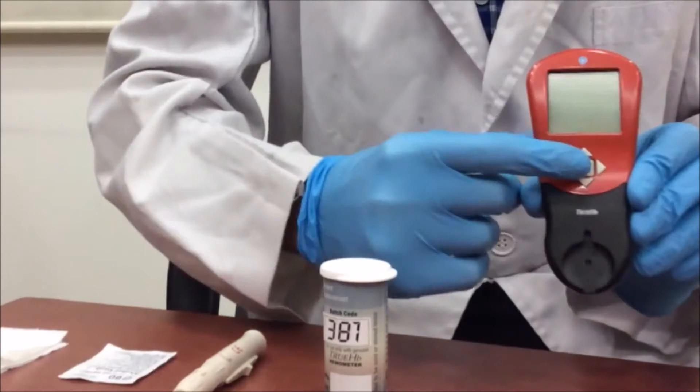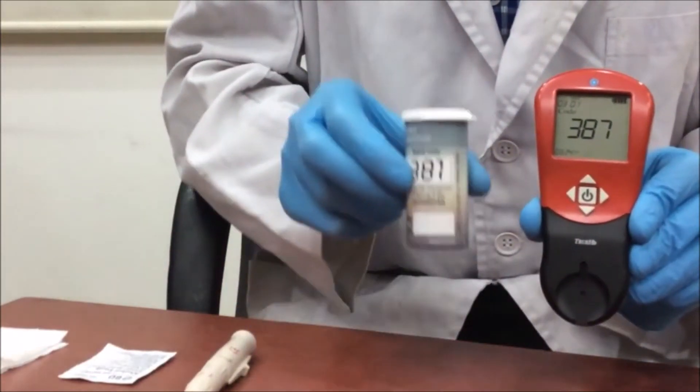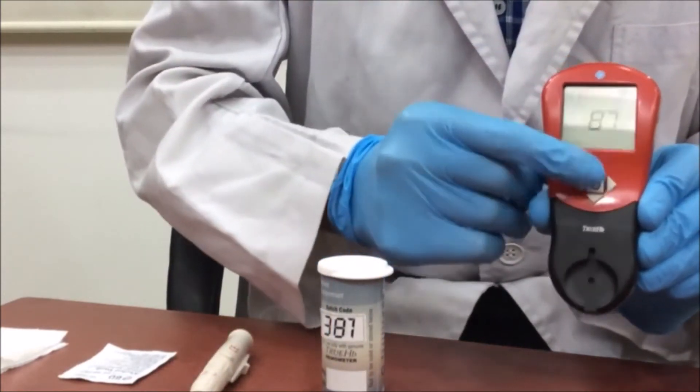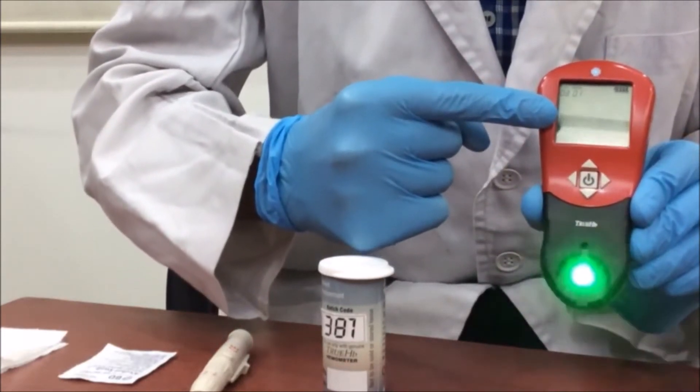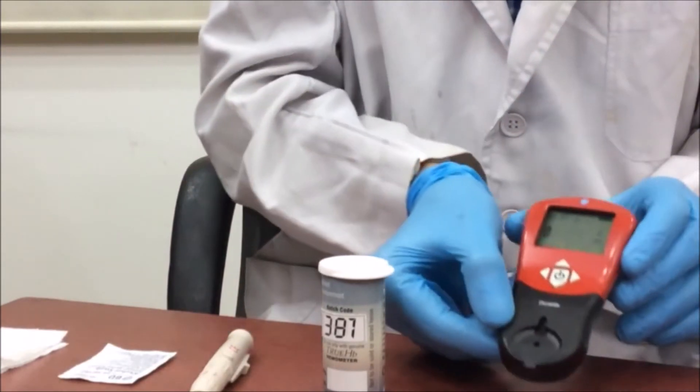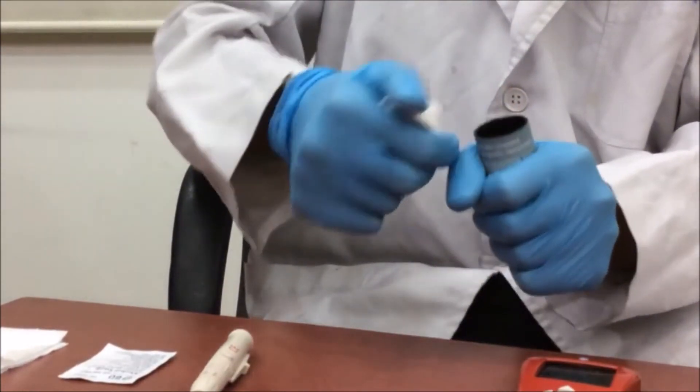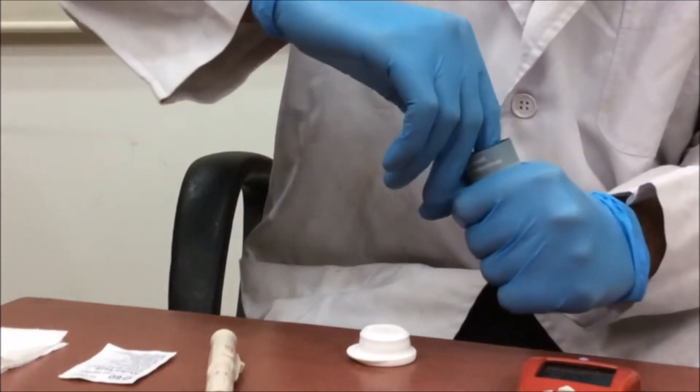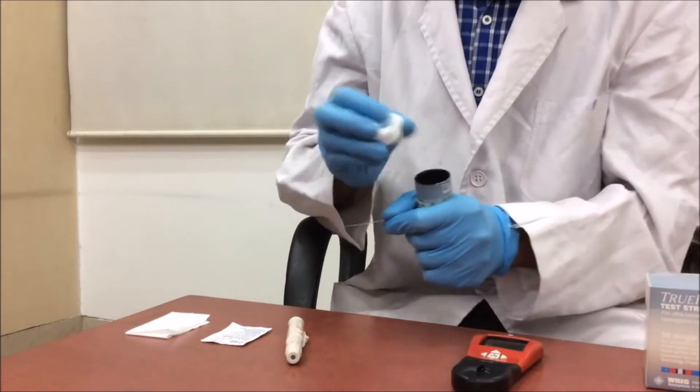With a long press, switch on the device and set the batch code. Refresh the power button. Now it will demand for the test strip. Gently take out a strip from the bottle, then put the cap on the bottle to protect it from humidity.